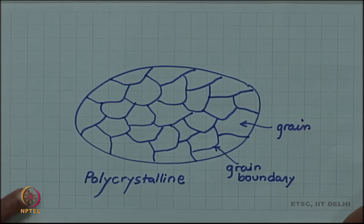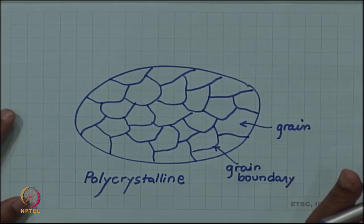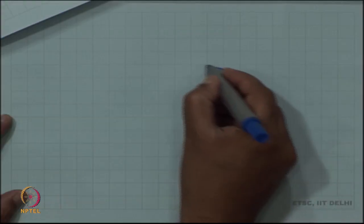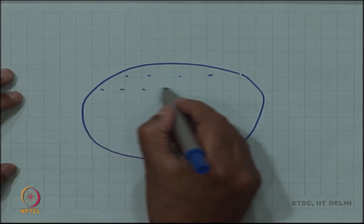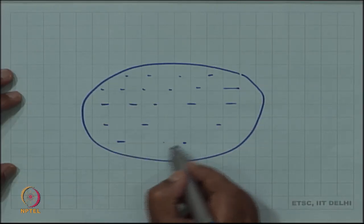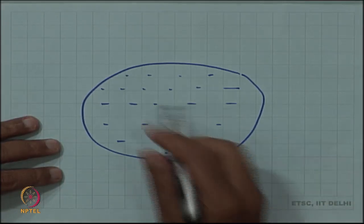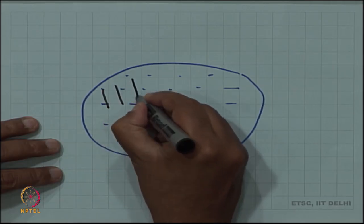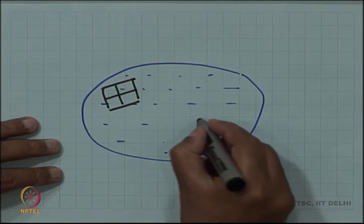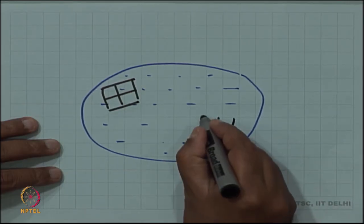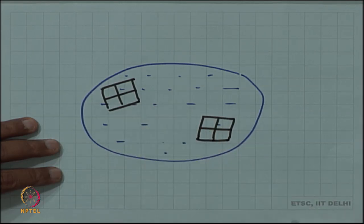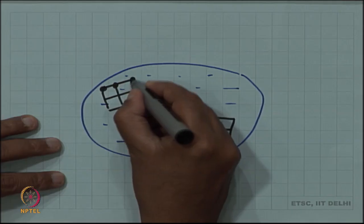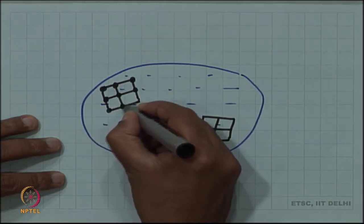This is typical of most materials. Why we have this we will study later, but in most cases the material solidifies from a liquid. Suppose we were doing a casting and we had a liquid phase — crystals start forming, and in different regions the same crystal will nucleate. Nucleation will not happen only in one region, but in more than one region, and in different regions the nuclei may orient themselves differently, because this is a random process: a solid nucleus is forming inside a liquid.